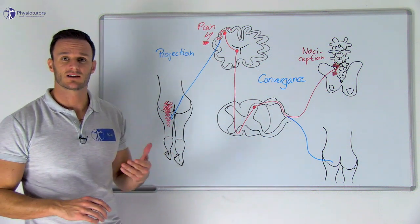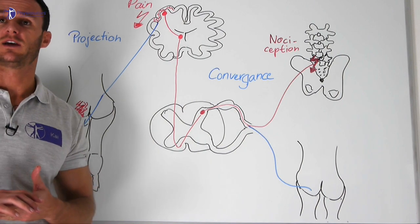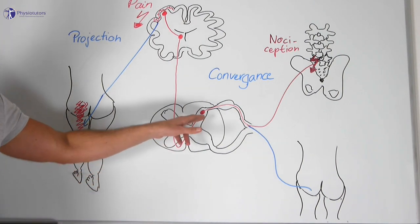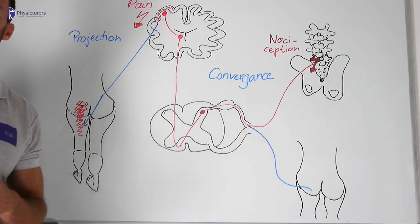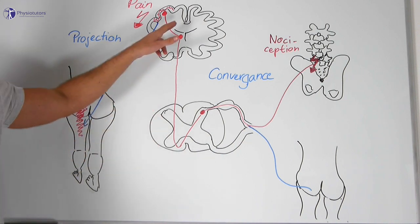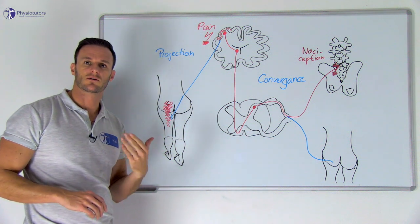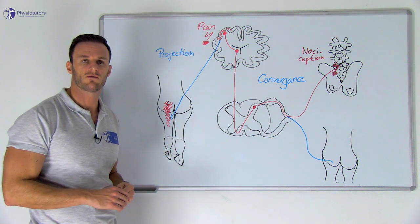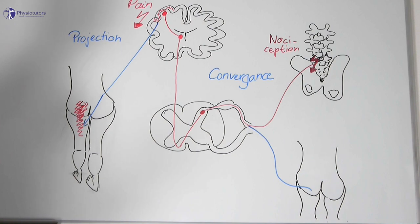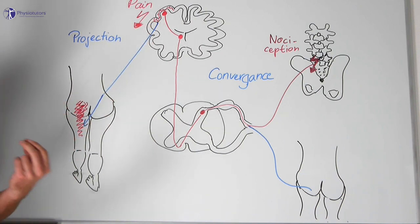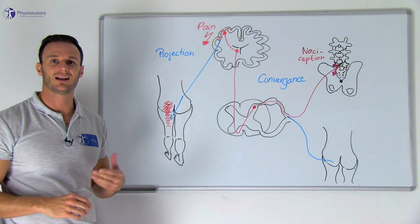Instead, pain is projected into a more distal area with a high density of nociceptive afferent innervation that converges onto the same second-order neuron in the dorsal horn as the tissue of actual nociception. The nociceptive input is then transported to the somatosensory cortex via the spinothalamic tracts and the thalamus. The somatosensory cortex is then confronted with the task of localizing the origin of nociceptive input. It then makes a projection error and decides to project the pain into the more distal tissue with the higher density of nociceptive afferent innervation that is represented to a greater extent in the somatosensory cortex.